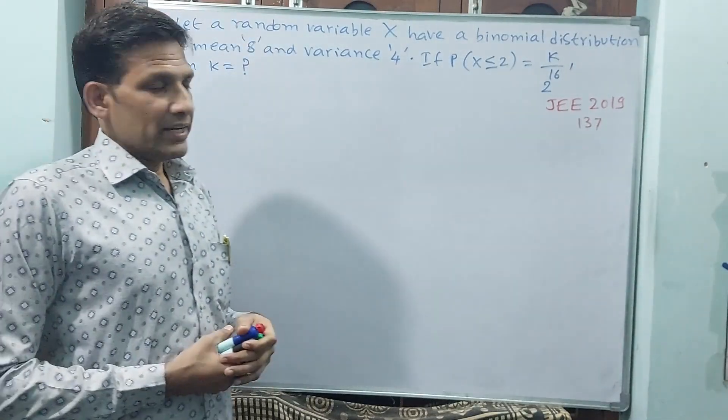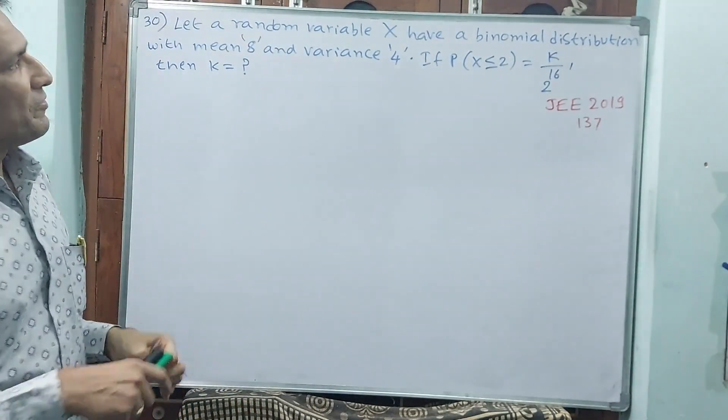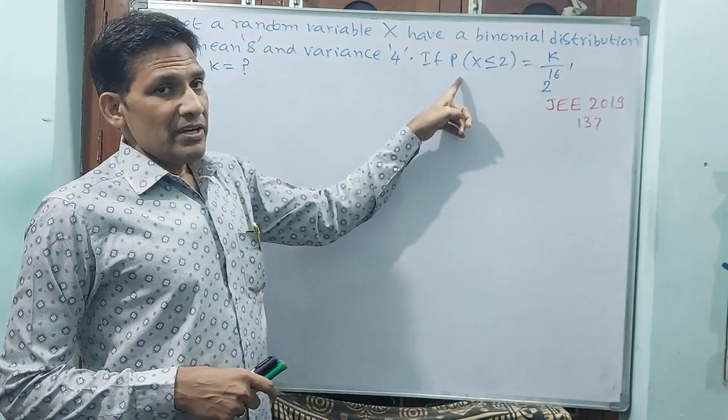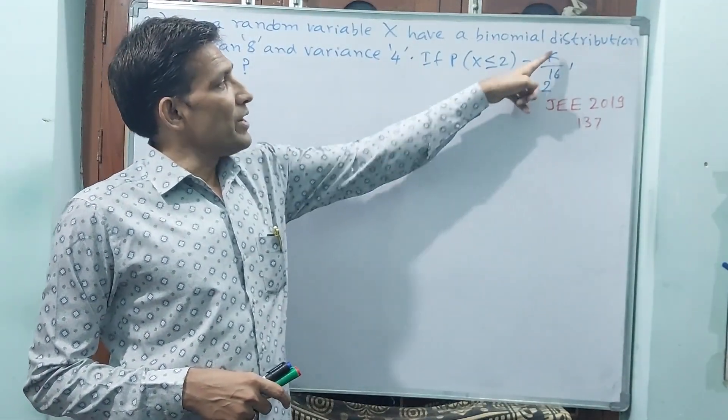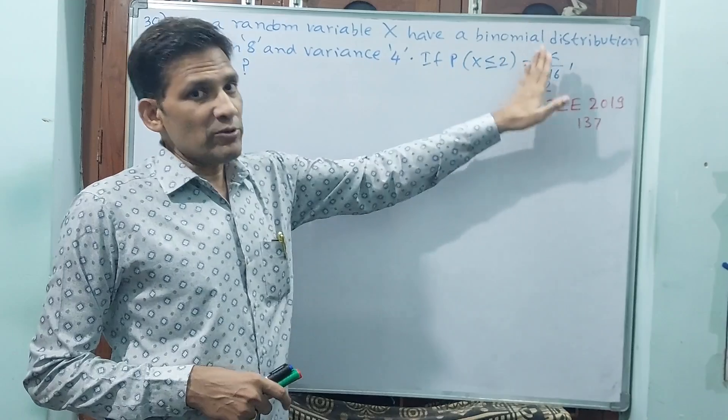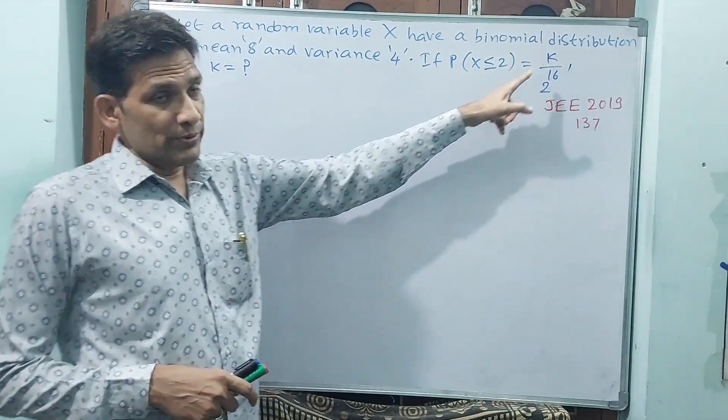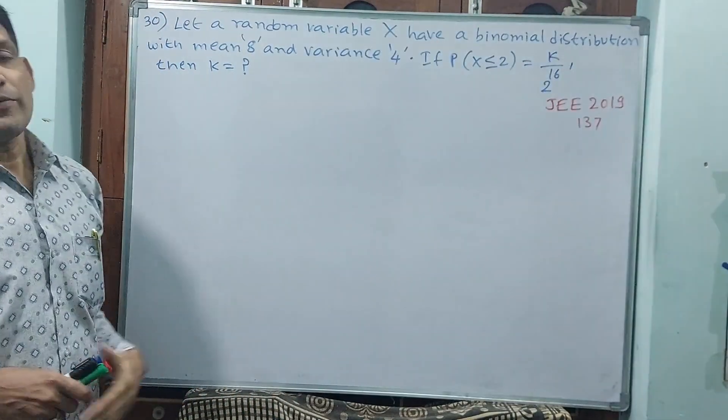Binomial distribution we will take, not Poisson's ratio, another formula we will have. If P(X≤2) = k/2^15, this is the argument, but we don't know the k value. Then what is the value of k?